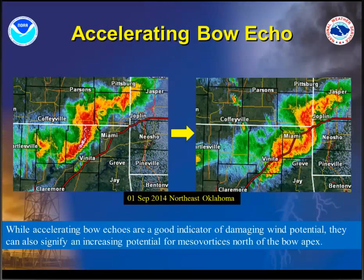Here is an example of an accelerating bow echo. This one came out of northeast Oklahoma back in September of 2014. You can see as it's approaching Neosho, Missouri how much it's bowed out. Going off memory, this produced two or three different tornadoes pretty close to the Neosho area in Newton County.